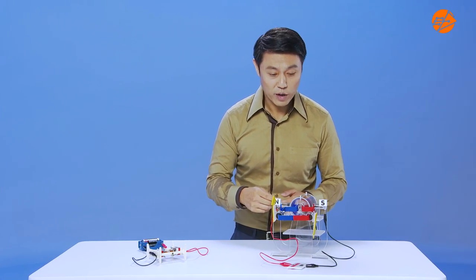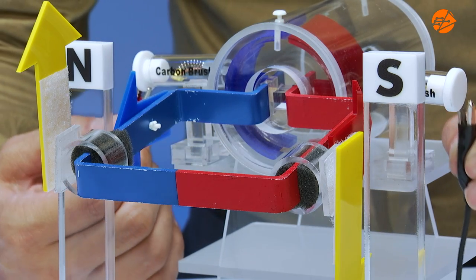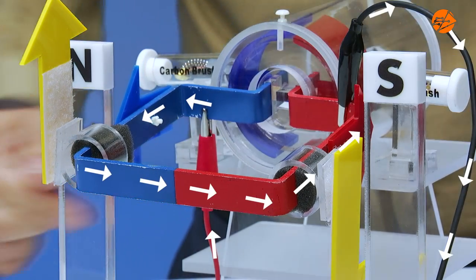Now, we shall focus on the function of the split ring. Let's connect the current supply directly to the coil without the split ring. What do you observe?